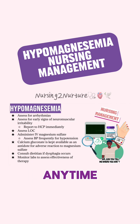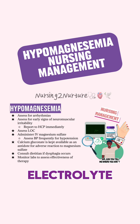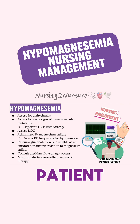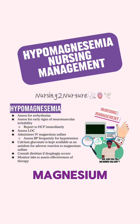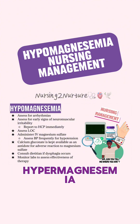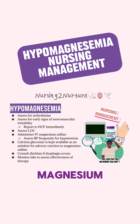Keep in mind that anytime a patient is being supplemented for an electrolyte deficit, this puts them at severe risk for toxicity of the electrolyte being corrected. For example, in this scenario, your patient is being treated for low magnesium. Administering magnesium sulfate puts them at risk for hypermagnesemia, which is too much magnesium in the body. For this reason, the nurse should be aware of the antidote for magnesium sulfate, which is calcium gluconate.